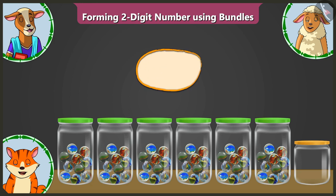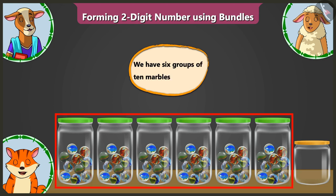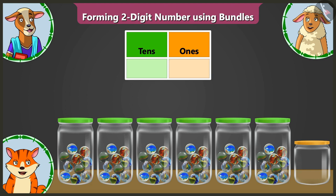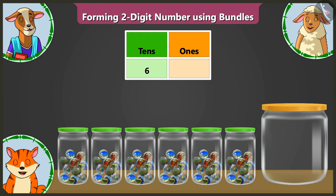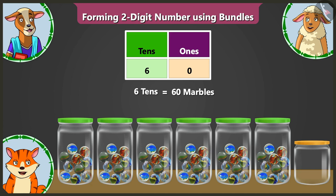Now you tell me, Lily — how many groups of 10s do we have? We have 6 groups of 10 marbles each. That's right. This is why we will write 6 in the 10s box. The 7th jar is empty — there is not even 1 marble in it. So we have to write 0 in the 1s box. We have 6 in the 10s box, which means 60, and 0 in the 1s box. So there are 60 marbles in total.